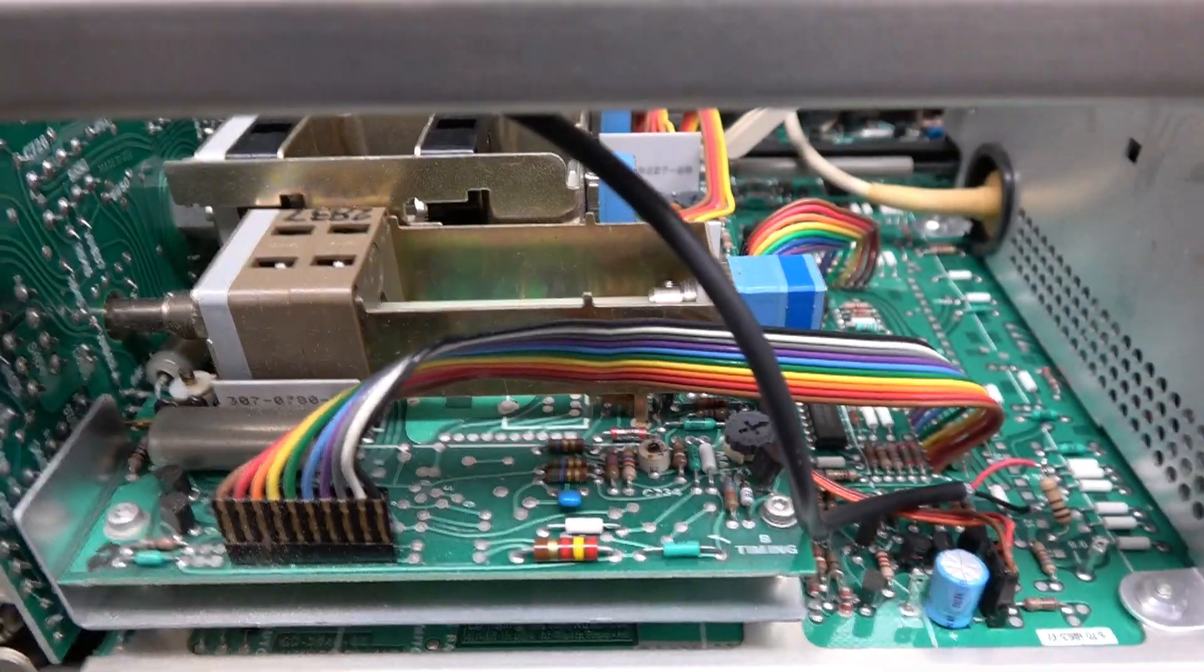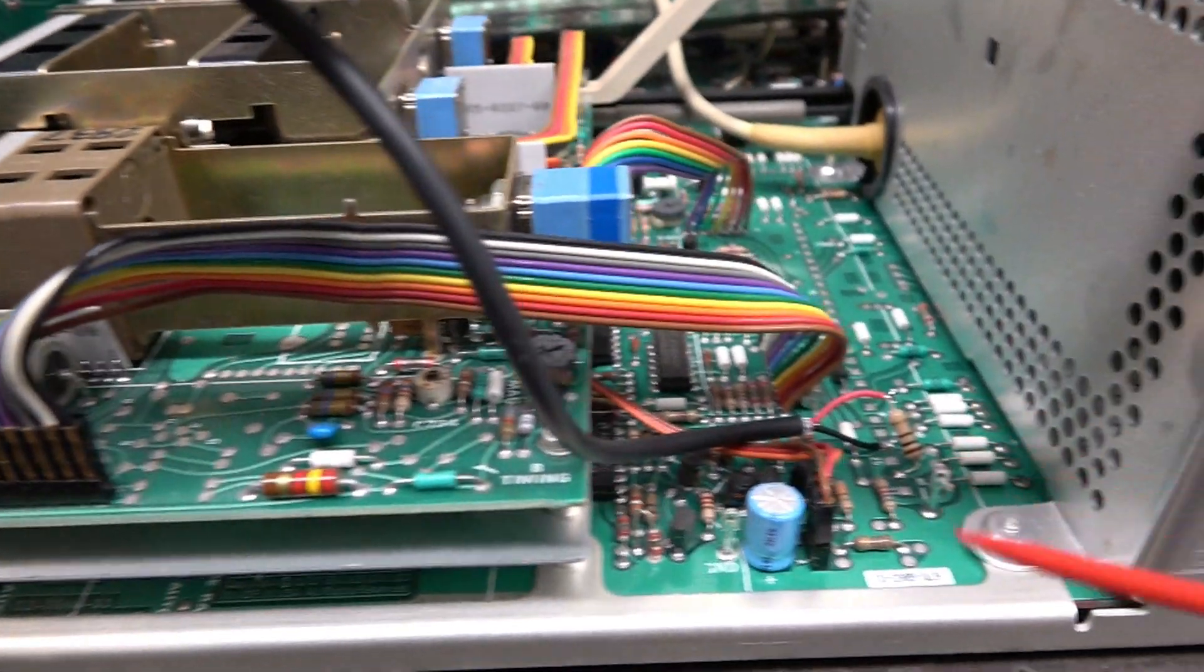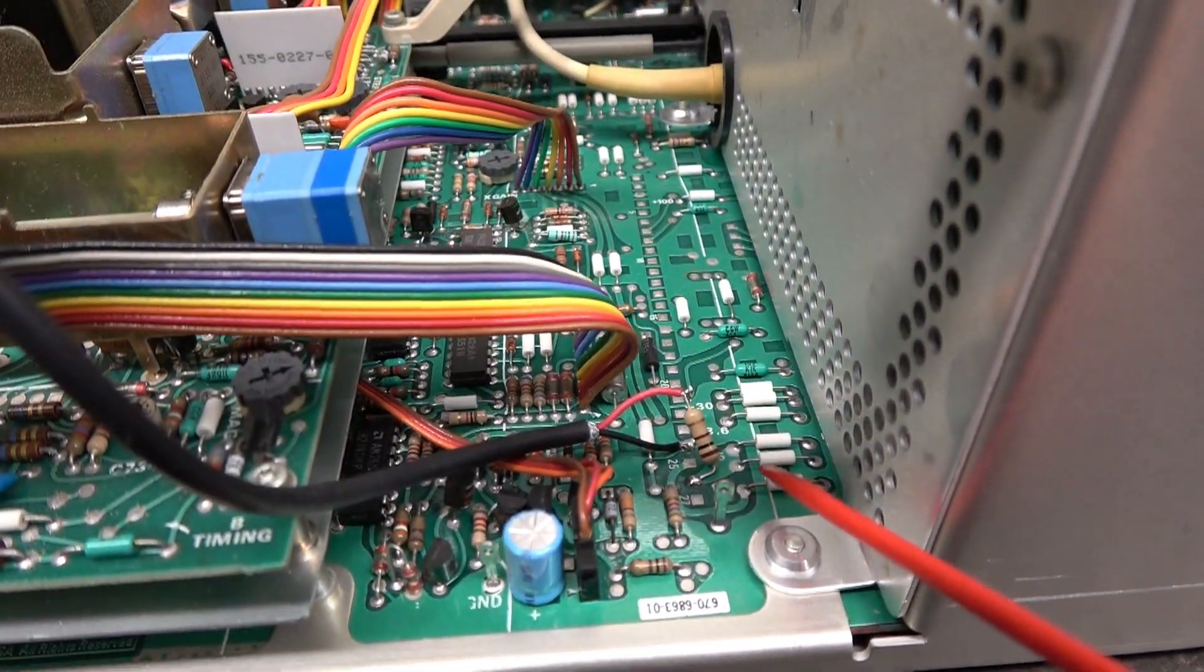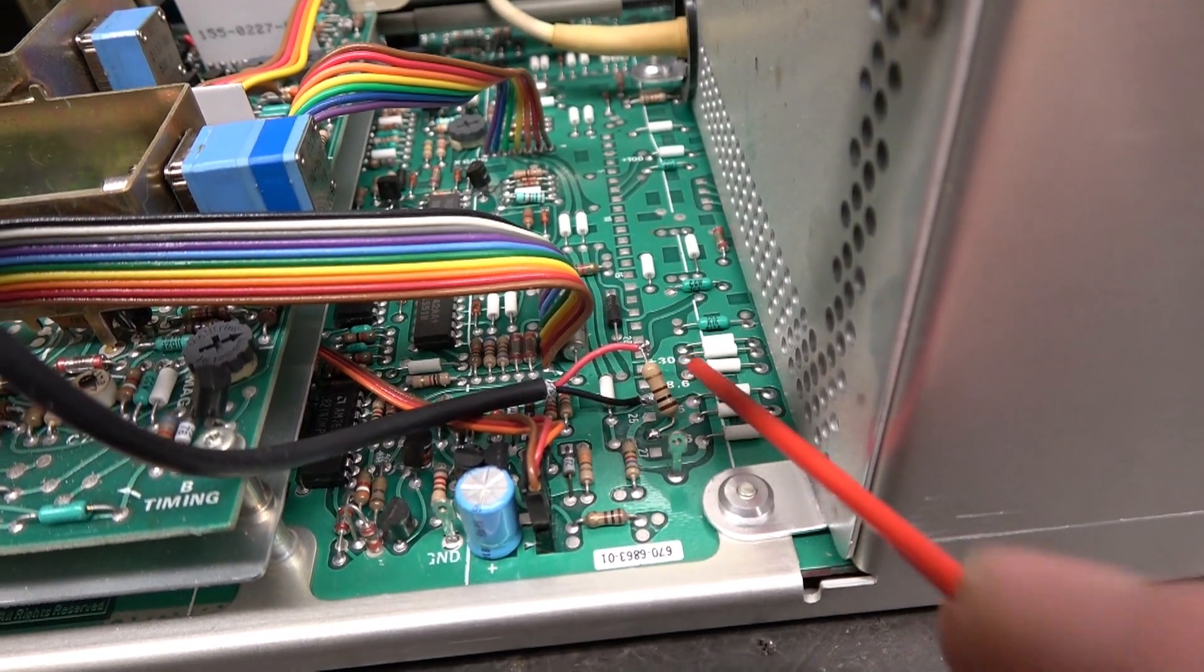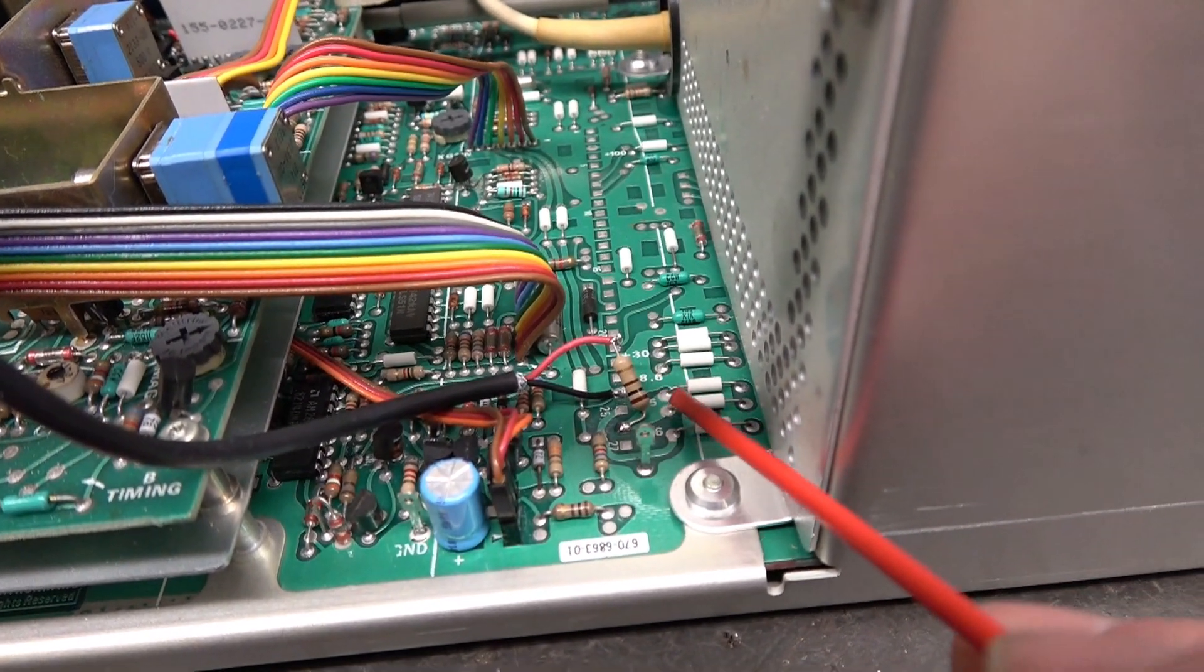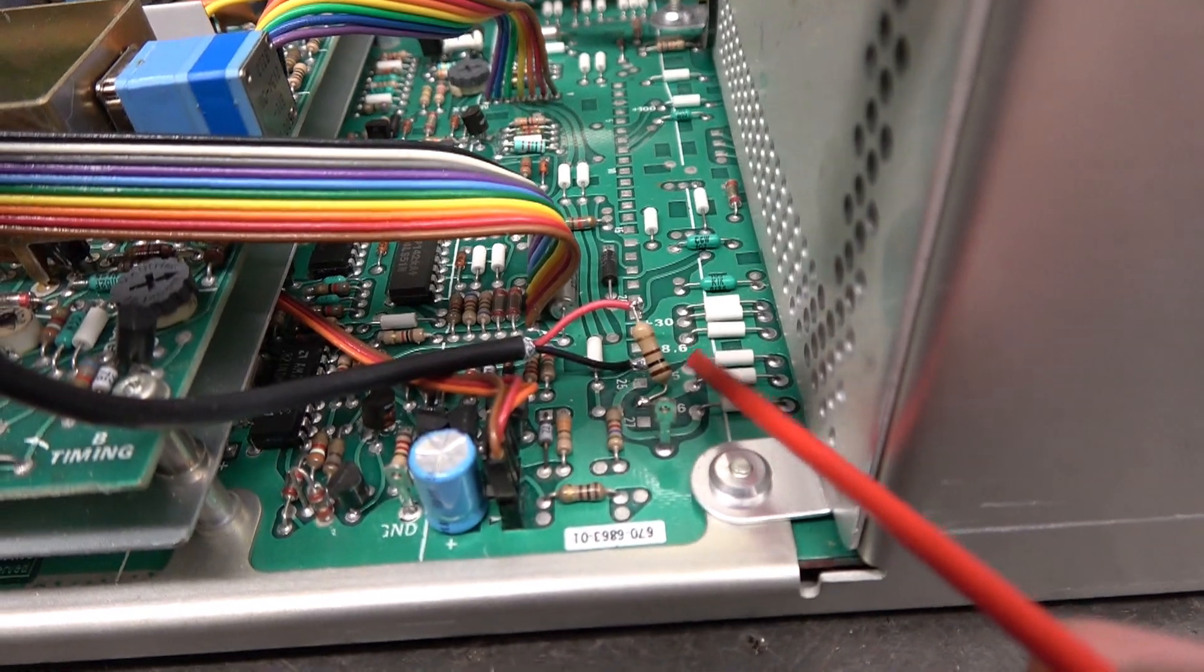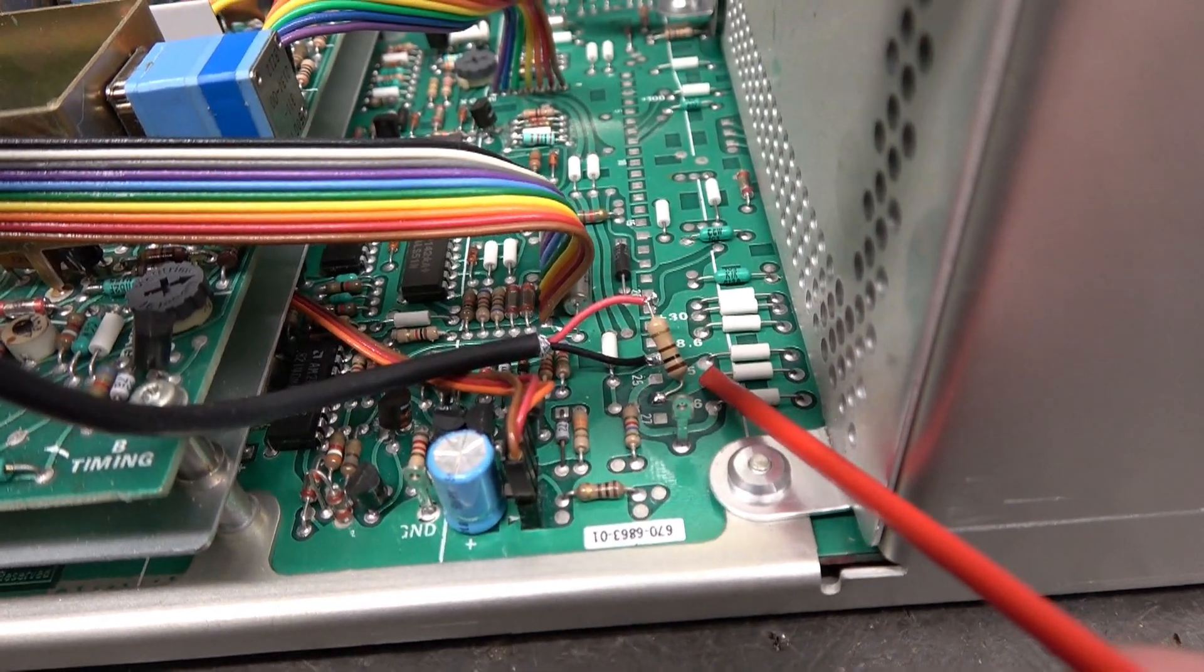Swung down a two conductor cable. And down here on the board, you'll see that the power supplies are identified. There's a plus 30, a plus 8.6. Here is a plus 5. That's where I tagged on.